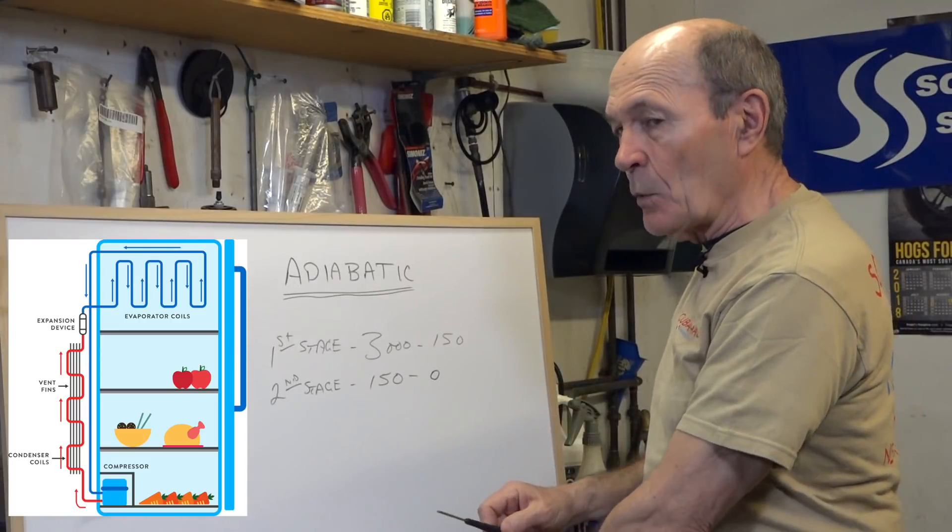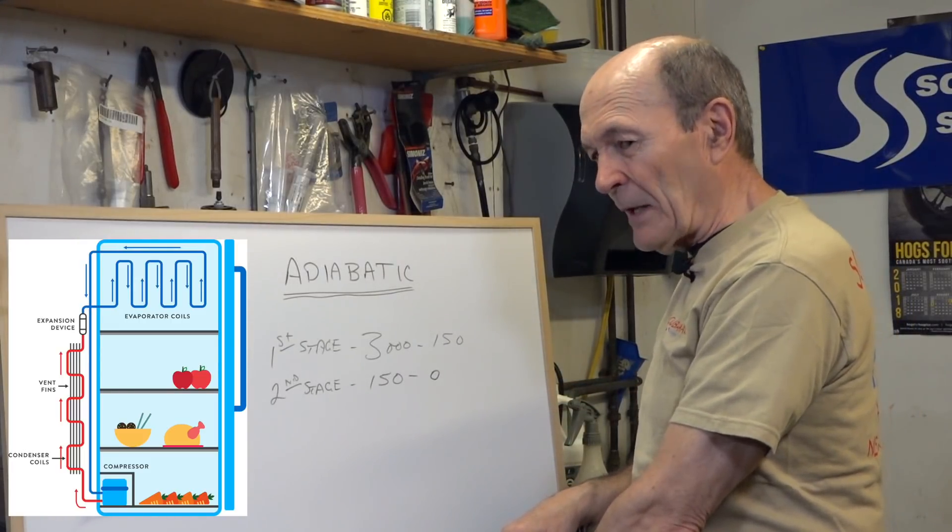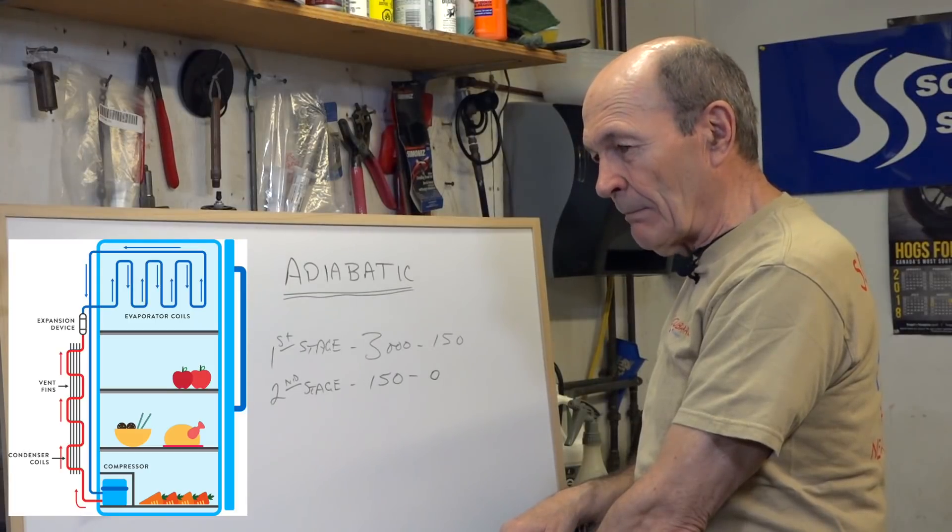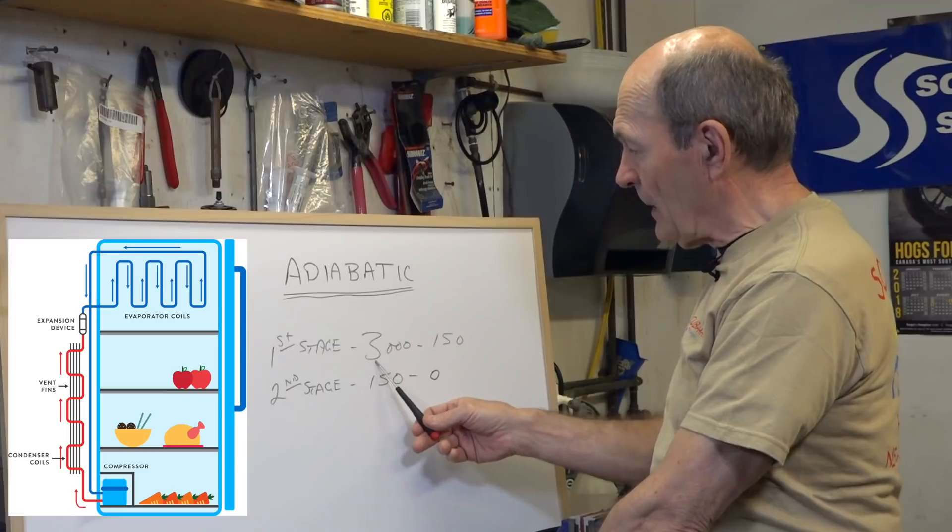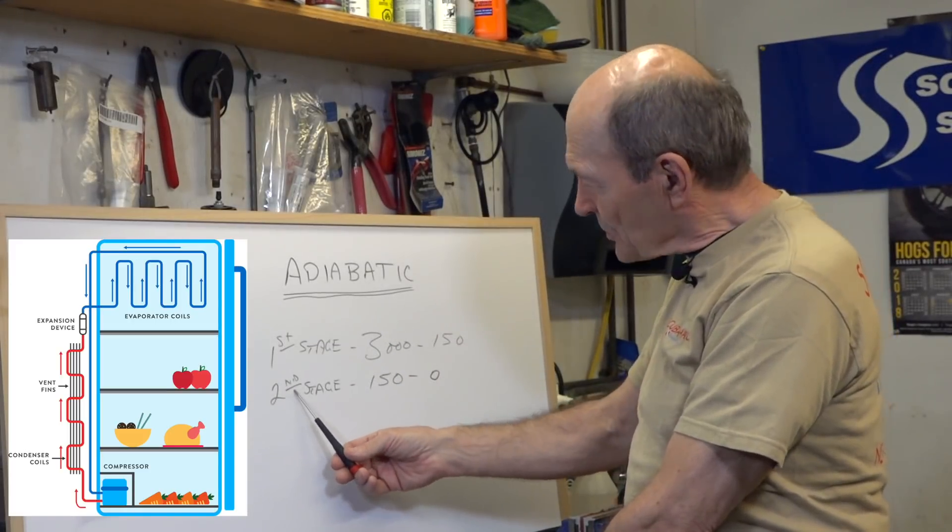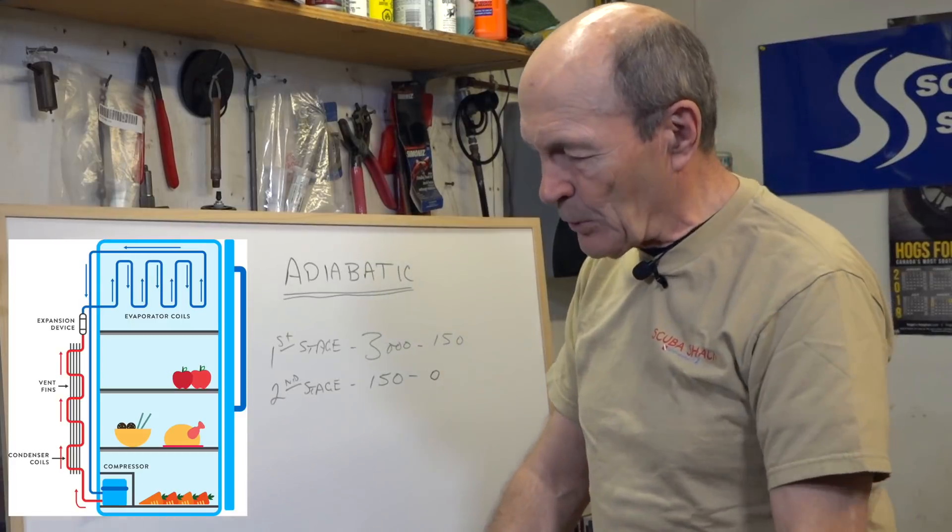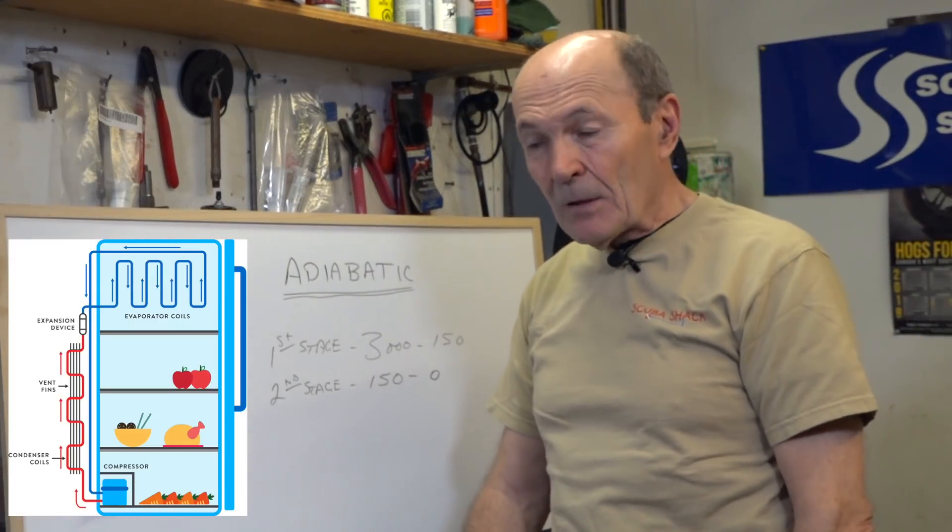However, look at these two. In which of these two stages do you think the greatest temperature drop will be? It's pretty obvious. The greatest temperature drop is right here. This is going from 3,000 all the way down to 150. The second stage, the temperature, the pressure drop, and subsequent temperature drop is much, much less. So I got news for you.